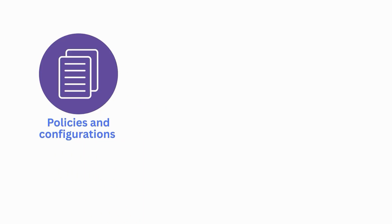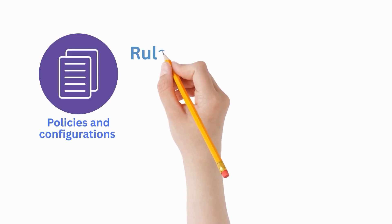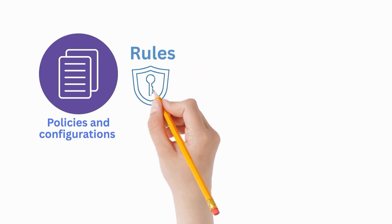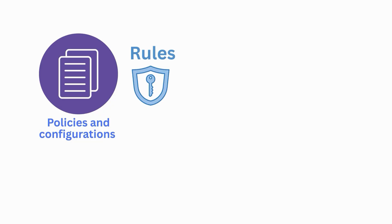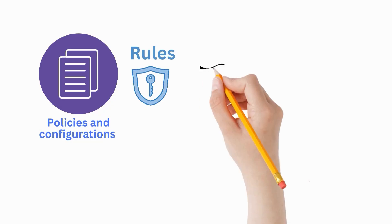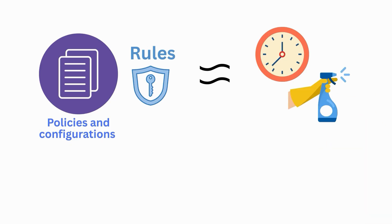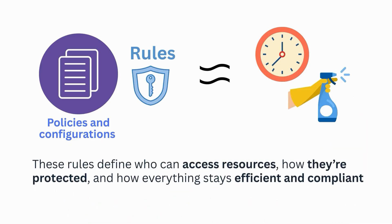Policies and configurations set the rules for how your tenant operates. They ensure security and compliance, like how apartment rules keep everything organized and safe, such as quiet hours or regular upkeep of shared facilities. These rules in the tenant define who can access resources, how they're protected, and how everything stays efficient and compliant.